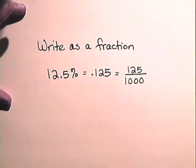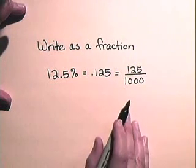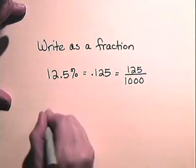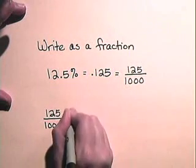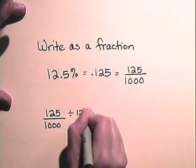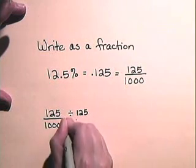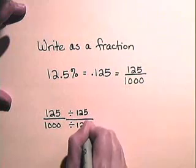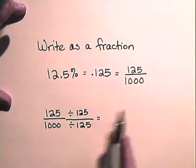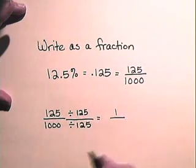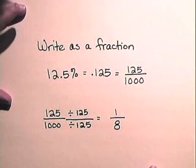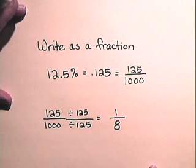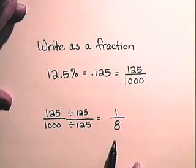Of course we're going to reduce the fraction to lowest terms. The numerator and denominator are both divisible by one hundred and twenty-five. So we have 125 over 1000; we divide both by one hundred and twenty-five. One hundred and twenty-five divided by one hundred and twenty-five is one, and one thousand divided by one hundred and twenty-five is eight. So twelve point five percent written as a fraction in lowest terms is one-eighth.